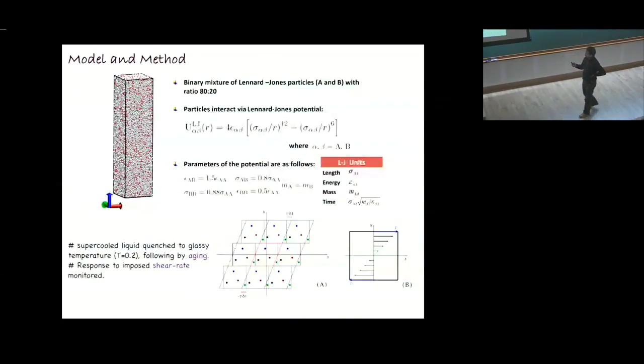The system that we are looking at is a standard glassformer which has been studied to death, this binary Lennard-Jones mixture with some standard parameters. We take such a system at a supercooled liquid state, and then we quench it very quickly to very low temperatures. Once we reach that temperature, it is followed by aging. We wait for some time before we apply the mechanical shear. There are two control parameters, aging and shear rate. For the first part of the talk, I'll concentrate on a fixed age, which is a large age, and then I'll show you how the response is depending on different shear rates. We do the deformation like this: you're applying a uniform shear rate in this direction, so the box is deforming like this.